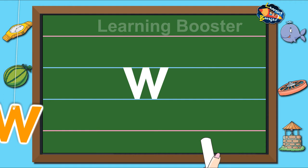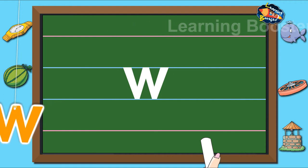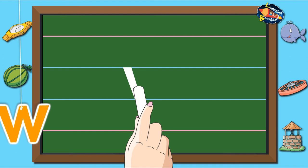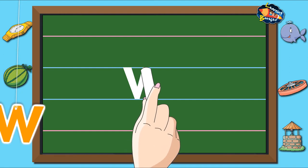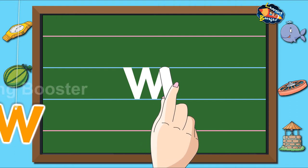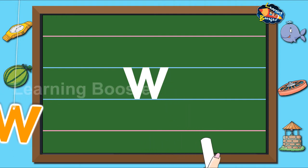Let us look at it once more. One slanting line down, then one slanting line up, another slanting line down, and one more slanting line up makes letter W.